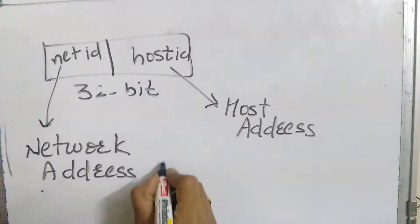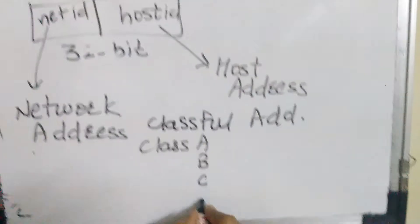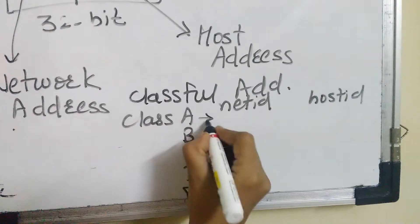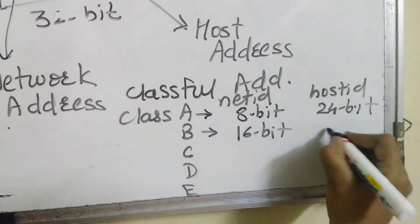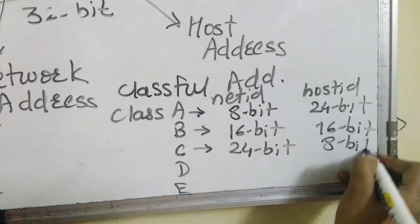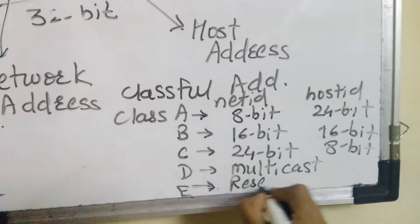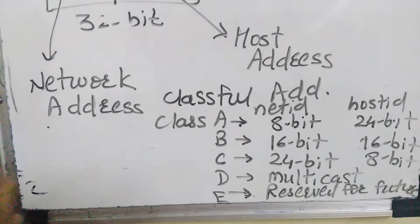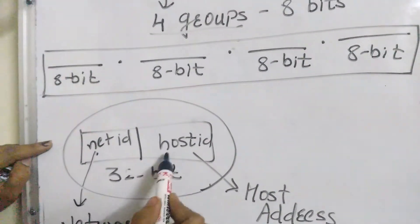There are five types of classful addressing — Class A, B, C, D, and E — which contain net ID as well as host ID, combinedly called the IP address. In Class A, net ID is 8-bit and host ID is 24-bit. In Class B, it is 16-bit net ID and 16-bit host ID. In Class C, it is 24-bit net ID and 8-bit host ID. Class D is used for multicasting and Class E is reserved for future use. So, IP address contains net ID (network address) and host ID (host address).